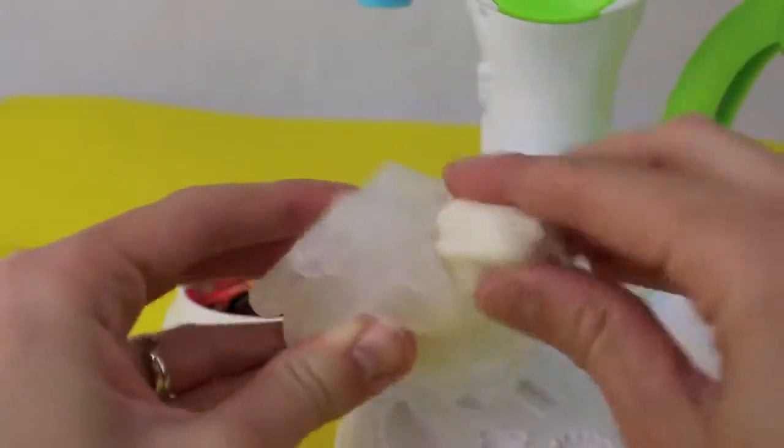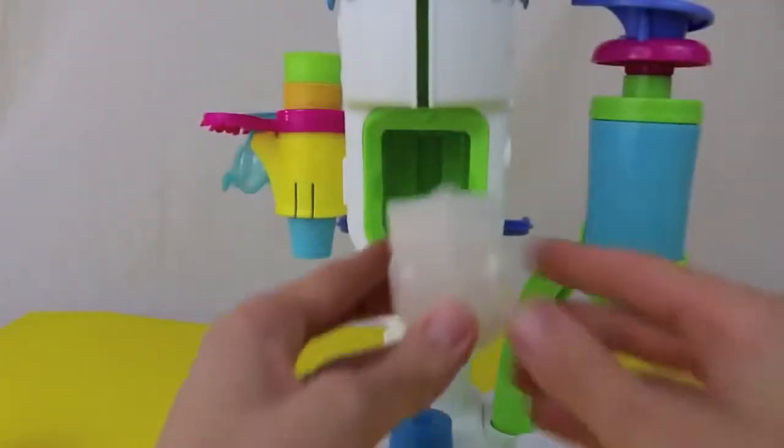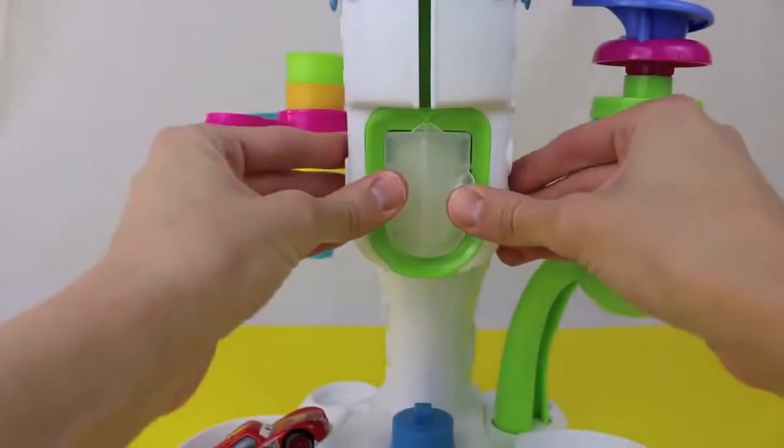So we'll just load up some Play-Doh in this container and then just slide the container into the front of the ice cream maker.